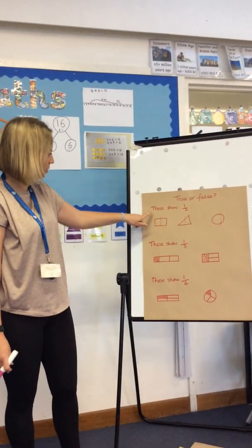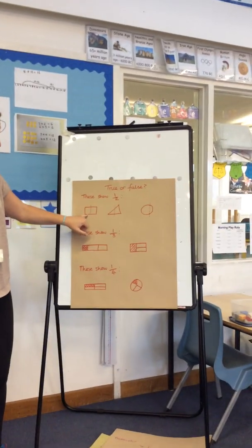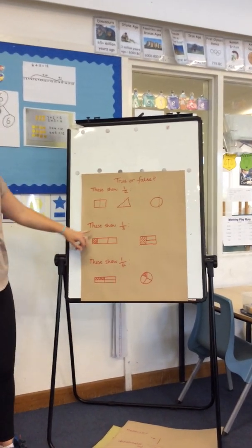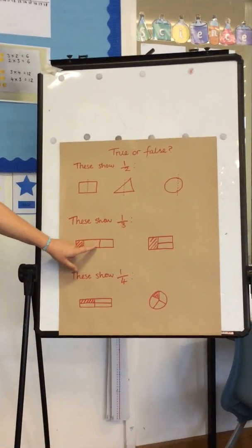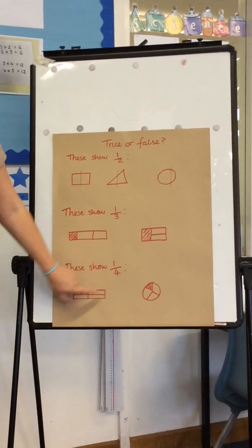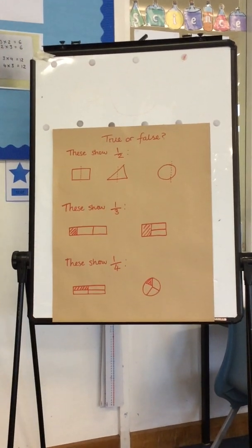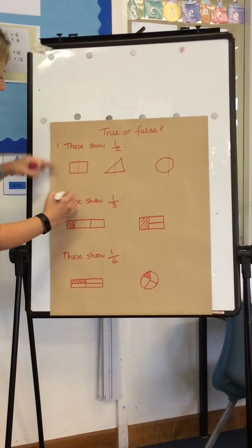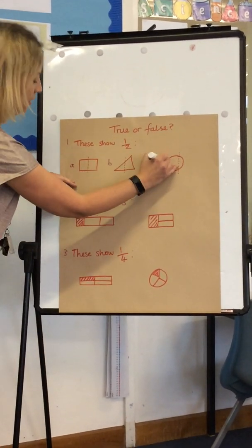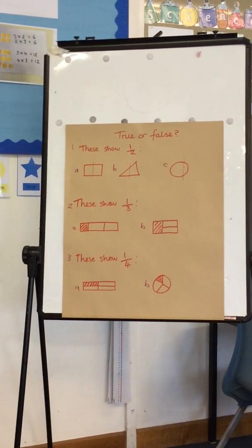True or false? Are these equal? These show one half — do they all show one half, are they equal? These show one third — are they equal? That's an interesting one. These show one quarter — are they equal? Have a little think. You might want to label them number one, two, three, or A, B, C, A and B. Pause and have a think.